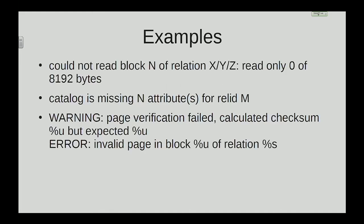There are many of them. For example, the first one is kind of famous: 'could not read block N of relation X' — 'read only 0 out of 8 kilobytes.' The second one: 'attribute is missing from relation.' If you are there, it's pretty bad already.